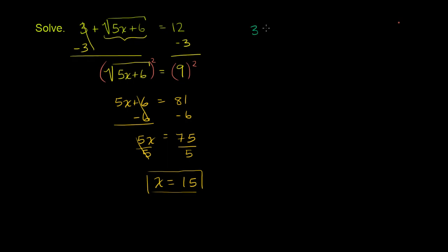So we get 3 plus the principal square root of 5 times 15, so 75 plus 6. I just took 5 times 15 and put our solution in. This should be equal to 12. Or we get 3 plus square root of 81, which needs to be equal to 12. And this is the principal root of 81, so it's positive 9. So it's 3 plus 9 needs to be equal to 12, which is absolutely true. So we can feel pretty good about this answer.